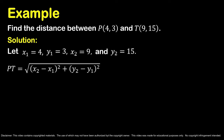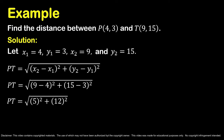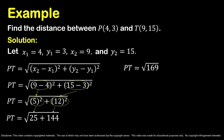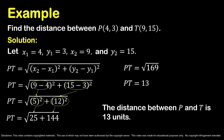Use the distance formula to determine the distance between the two points. Substitute the given values, then simplify. Perform first the operation inside the parenthesis: 9 minus 4 is 5, and 15 minus 3 is 12. 5 squared is 25, and 12 squared is 144. 25 plus 144 is 169, and the square root of 169 is 13. Therefore, the distance between points P and T is 13 units.